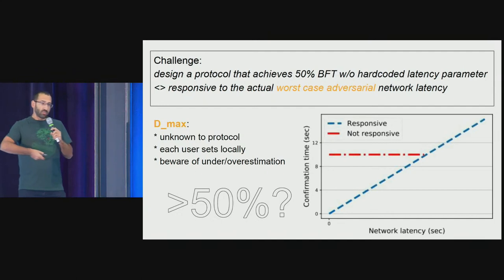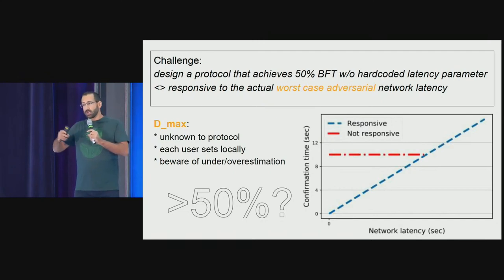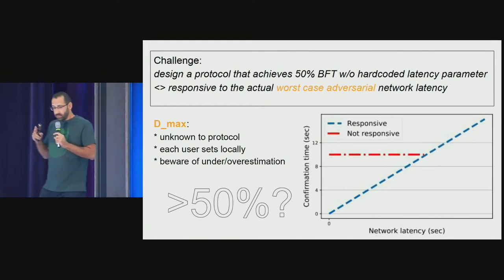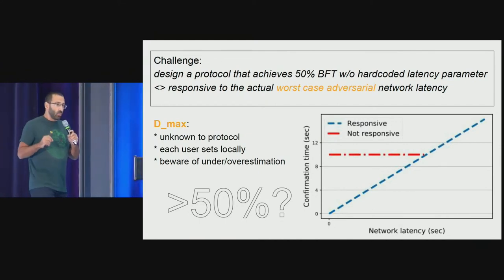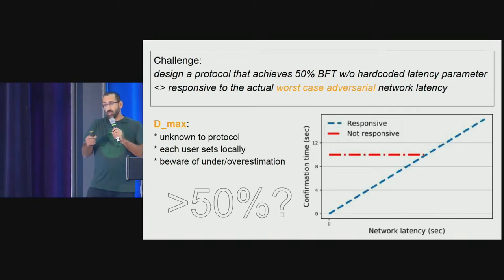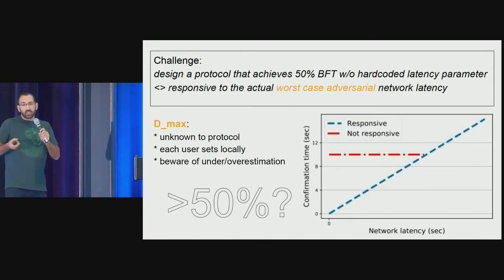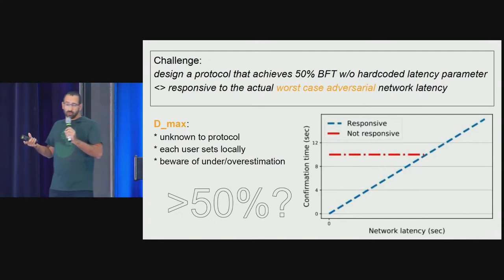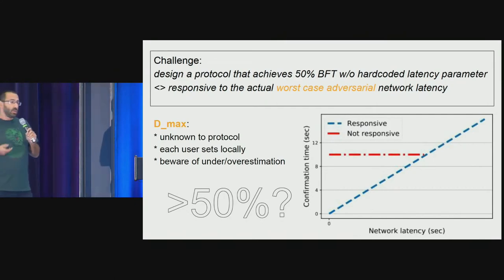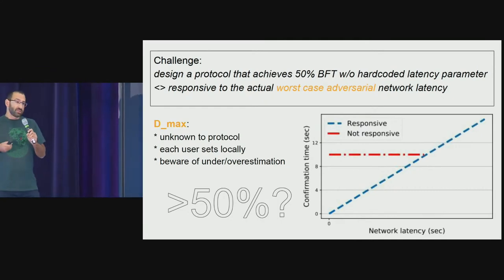If I see that Bitcoin blocks are propagating within one or two seconds, that's not enough. I need to additionally assume an attacker cannot delay blocks by more than 10 seconds — so my parameter is 10 seconds. We are not responsive to the actual observed network delay, but to the actual worst-case delay you believe the network to have. Any user can set her own beliefs — there's no agreement on this parameter. You can run your full node waiting for 10 confirmations and believe the delay to be 2 seconds, or wait 30 confirmations and believe the delay to be 10 minutes. It's a user's local decision what parameter to set for D.